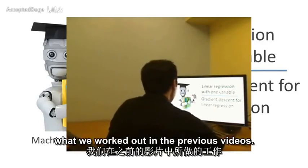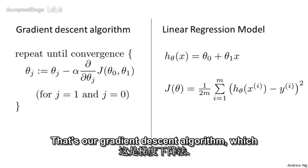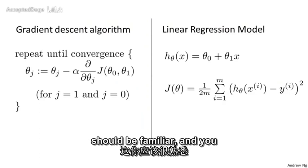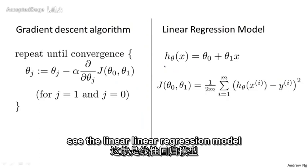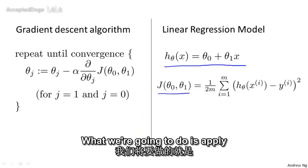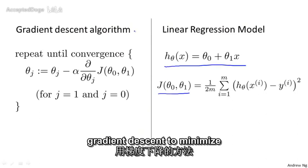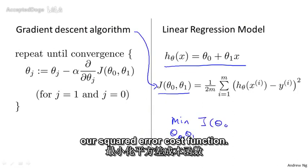So this was what we worked out in the previous videos. There's our gradient descent algorithm, which should be familiar. And here's the linear regression model with our linear hypothesis and our squared error cost function. What we're going to do is apply gradient descent to minimize our squared error cost function.